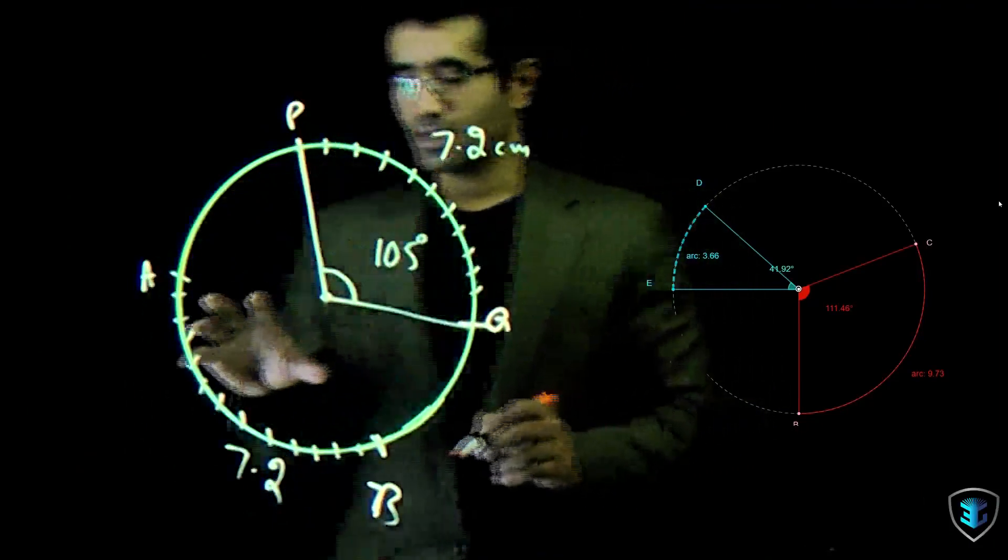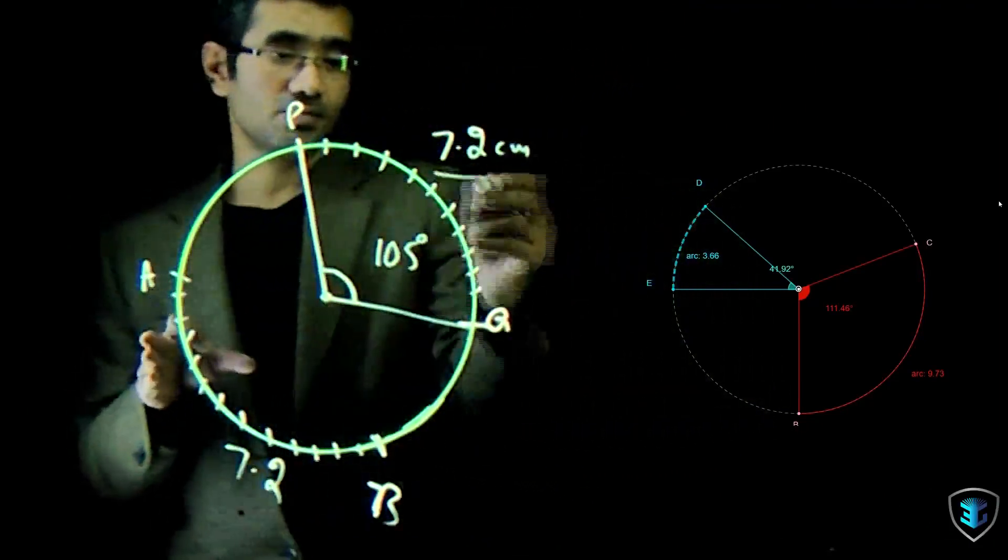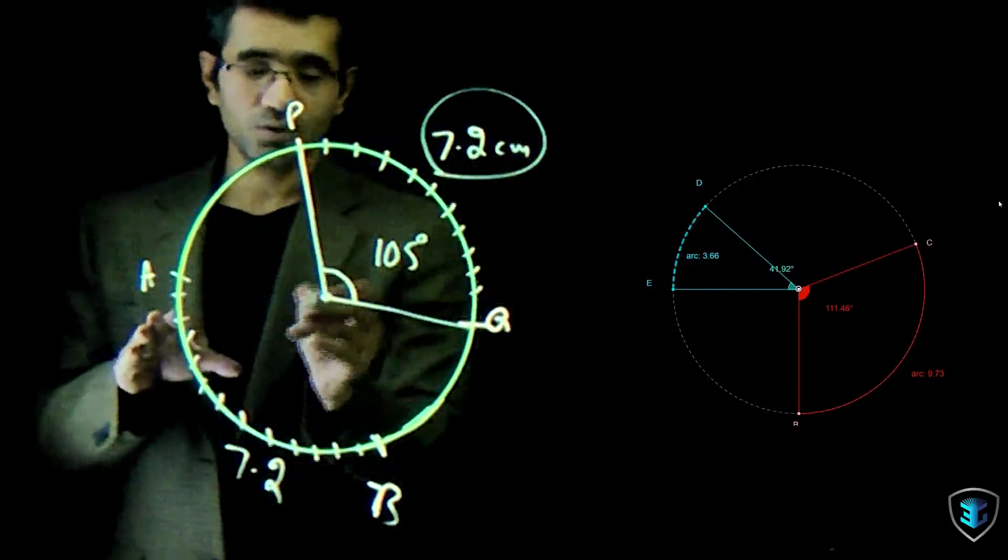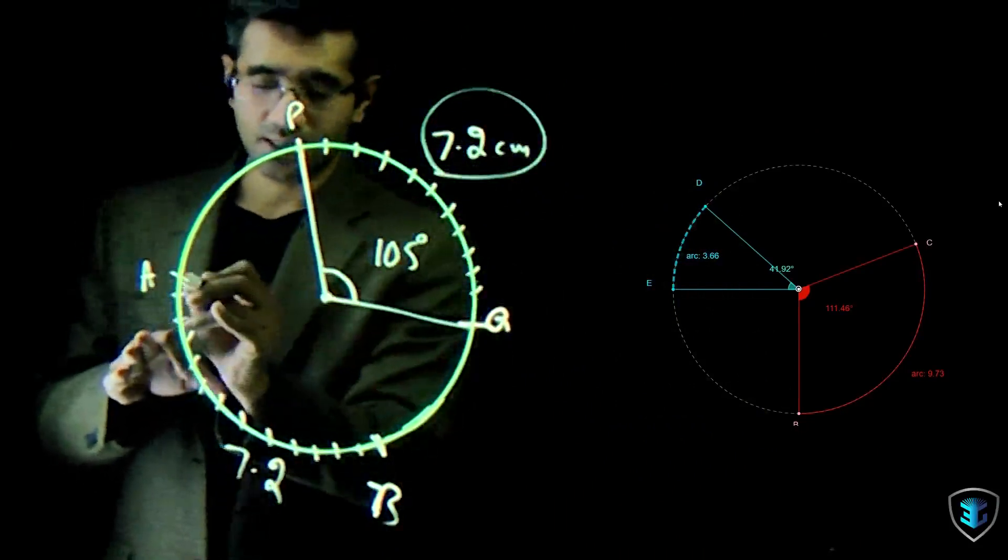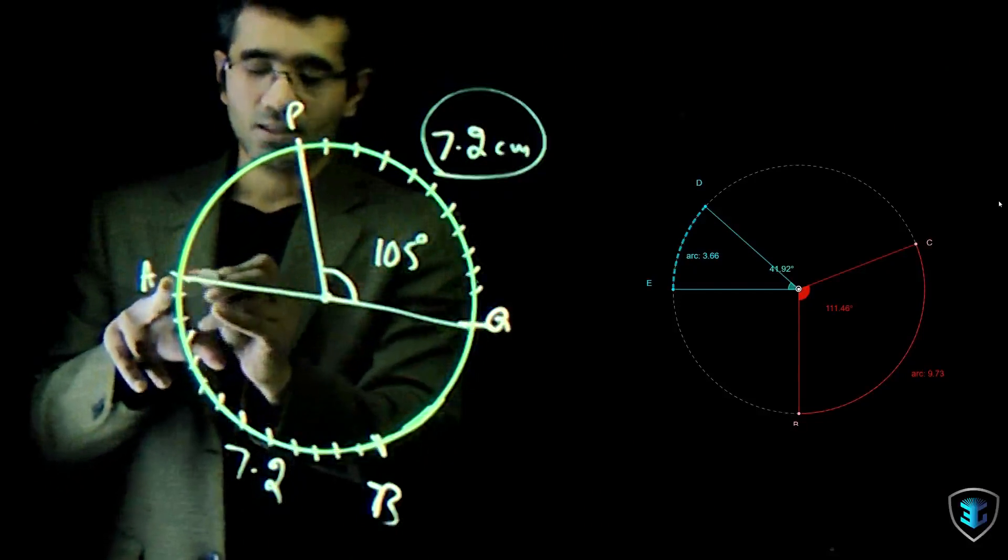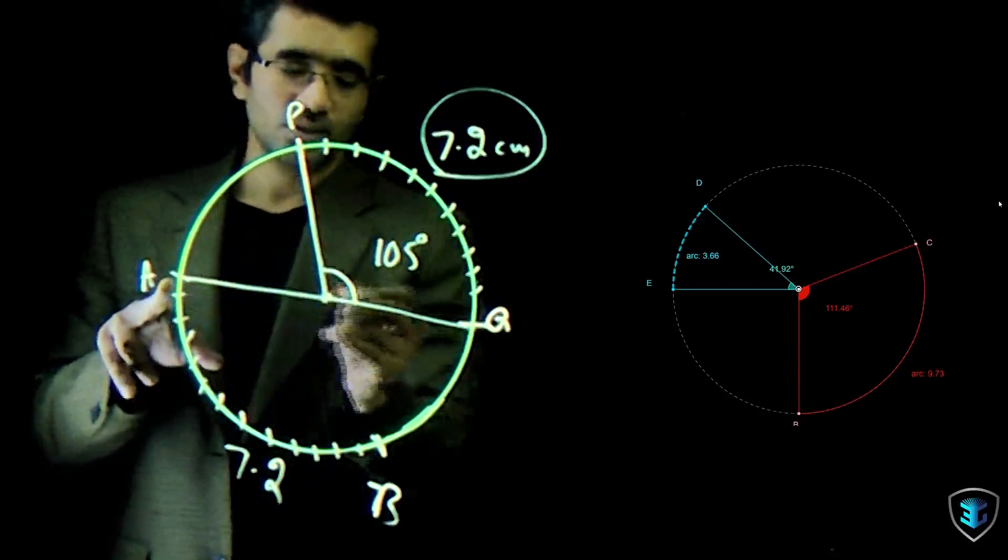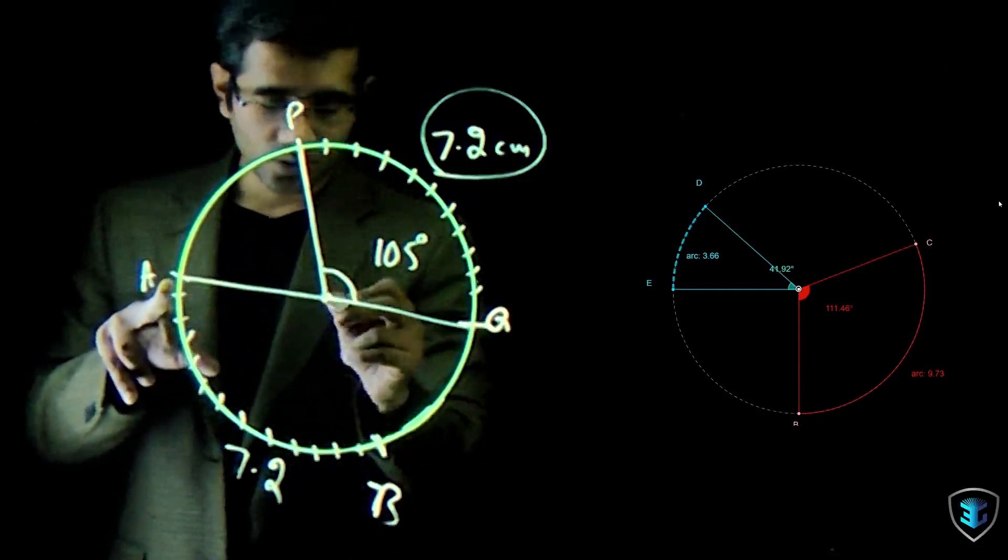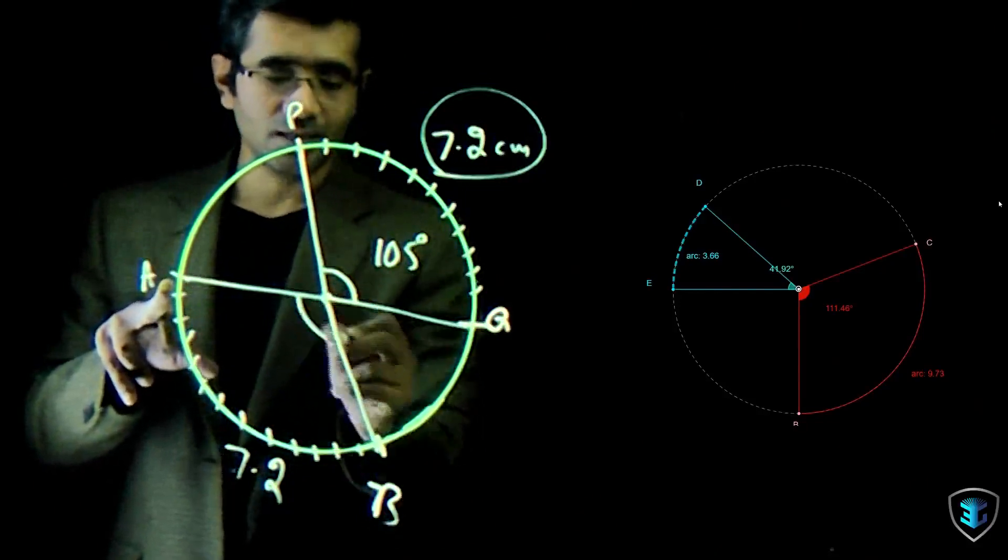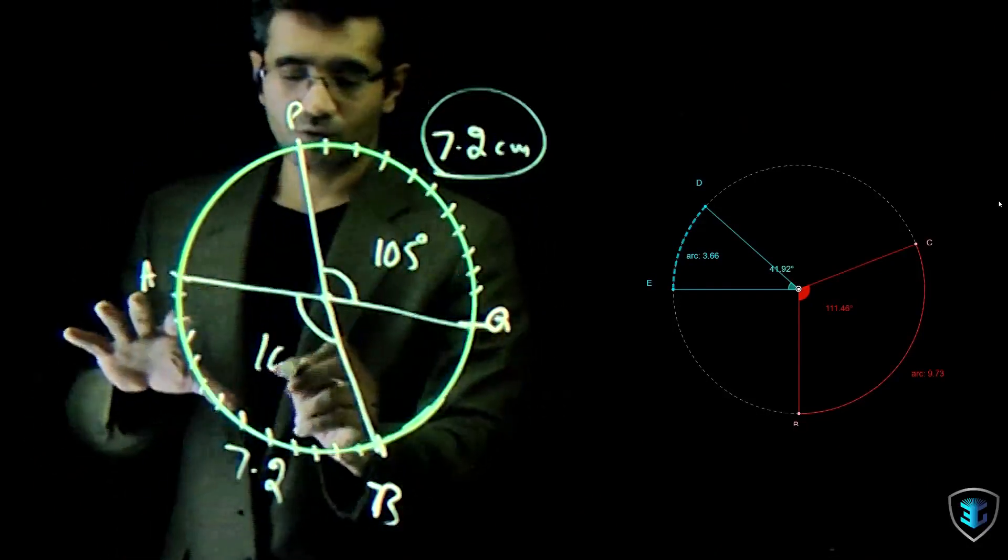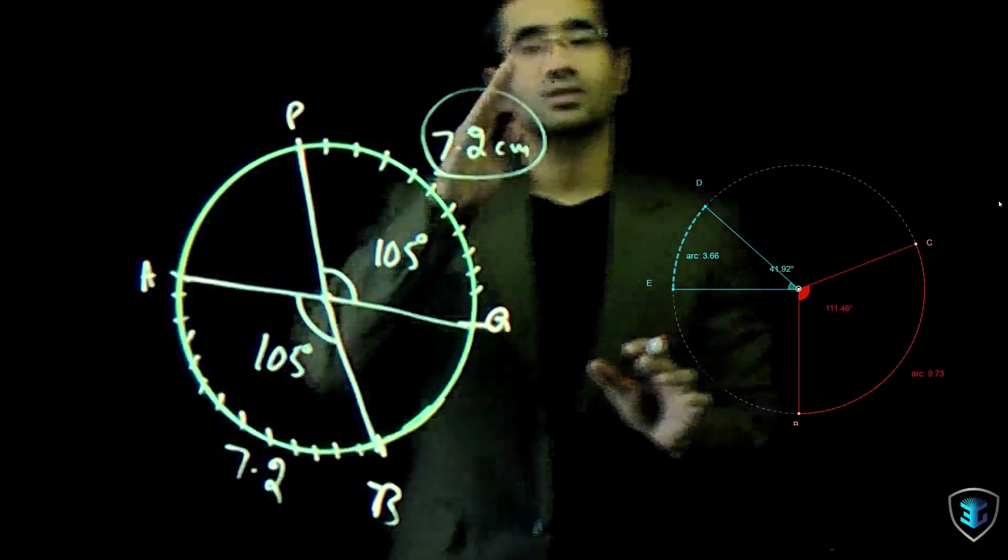So when I see on the other side, the arc AB of the same length would also subtend the angle at the center. I'm joining point A, the starting part of the arc, to the center, and the end part of the arc to the center again. And this angle will be 105 degrees, that's exactly what the statement says.